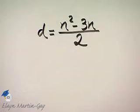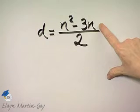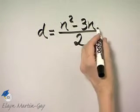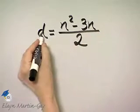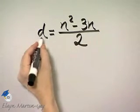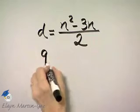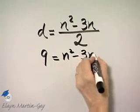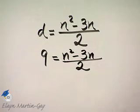Now, we want to find the number of sides, remember that's N, of a polygon if it has nine diagonals. In other words, we want to find N if D, the number of diagonals, is nine. So this is what we're solving. This is, by the way, a quadratic equation.